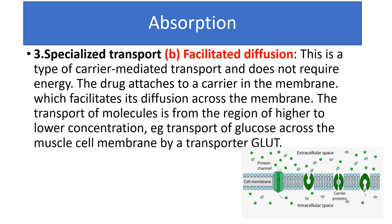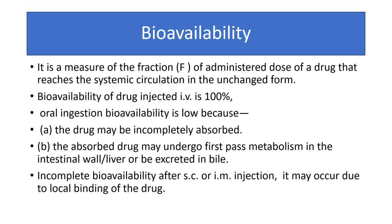The second type of specialized transport is facilitated diffusion. In this carrier-mediated transport, there is no requirement of energy. The drug attaches to a carrier protein in the membrane, which facilitates diffusion across the membrane. Transport is from a region of higher to lower concentration. An example is the transport of glucose across the muscle cell membrane by the transporter GLUT. GLUT is the carrier protein, and glucose crosses the muscle fiber through it, so a protein is required for transportation.